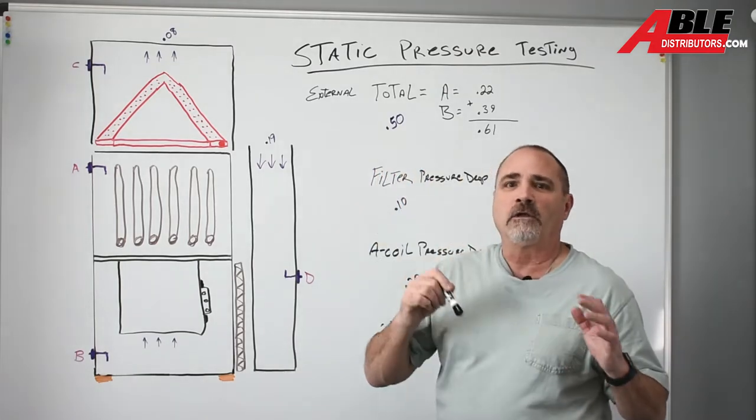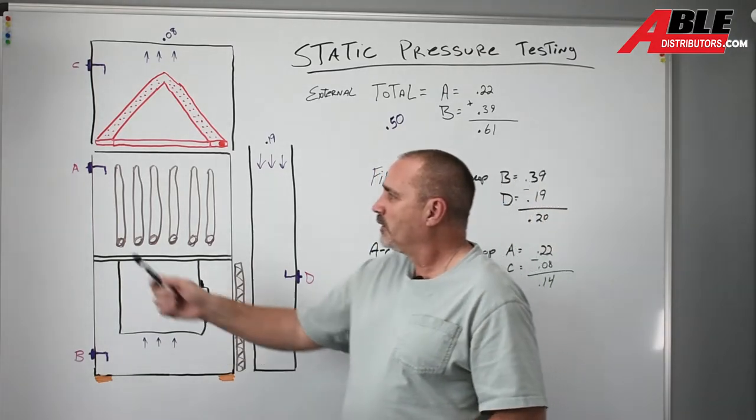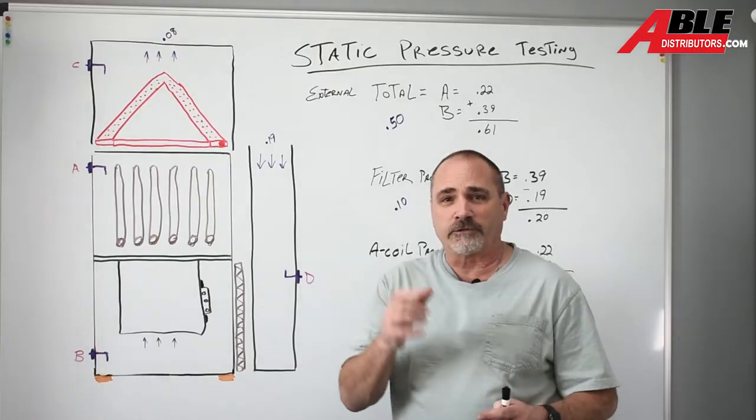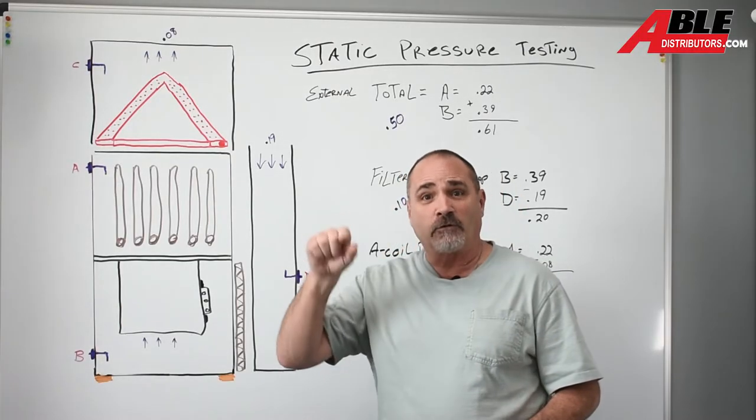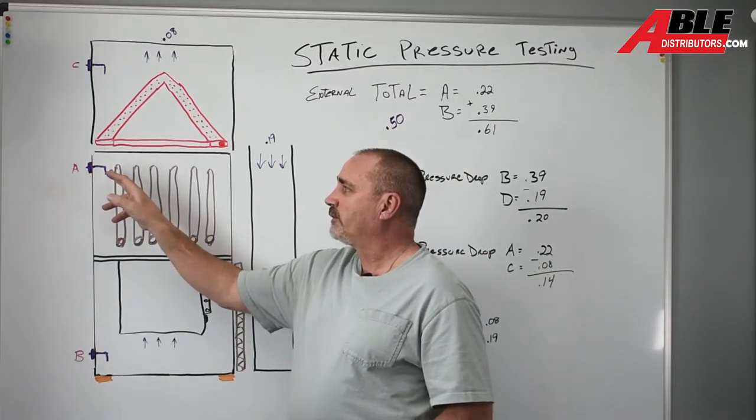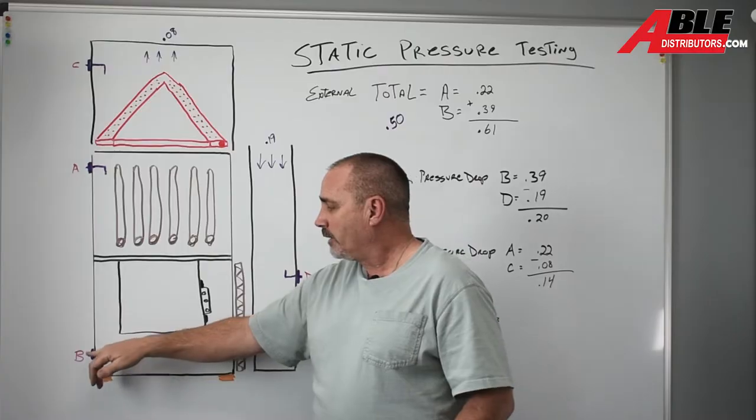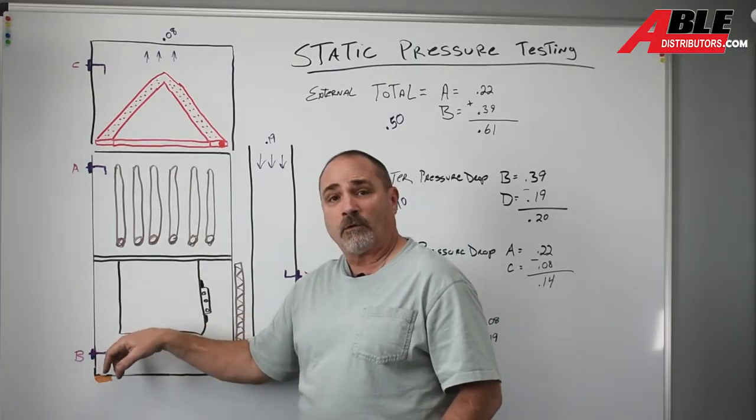To check total external static pressure you're going to drill a hole in the side of the furnace. Yes, it is a hole in the side of the furnace. I suggest a step bit so you don't go all the way through. A hole in the front top of the furnace in the side below the A-coil and then a hole in the side of the furnace in the blower compartment.